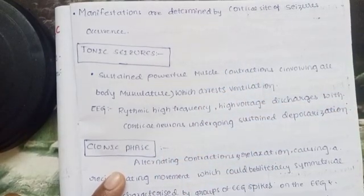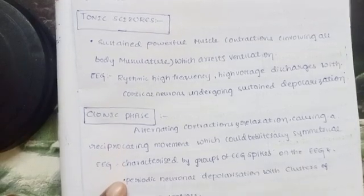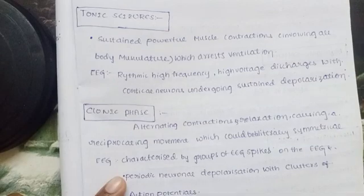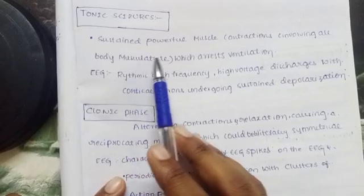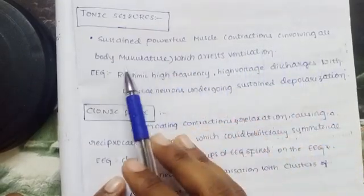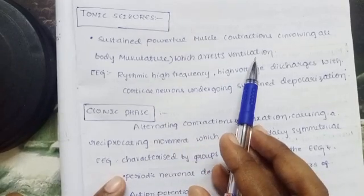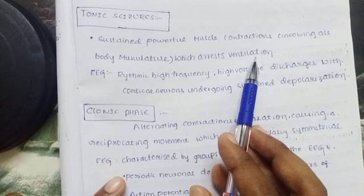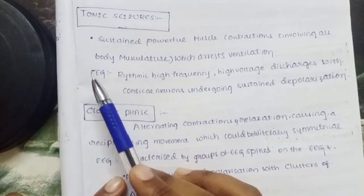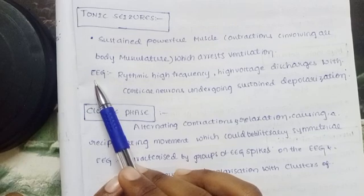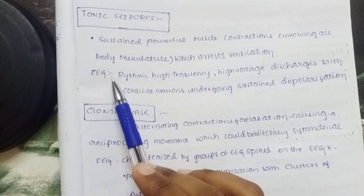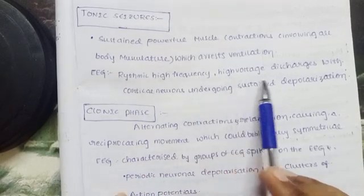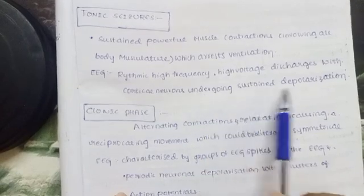Next, tonic seizures: in generalized tonic-clonic, first tonic activity occurs then clonic, but in tonic seizures only muscle contractions happen without jerk movements — sustained powerful muscle contraction involving all body musculature, which arrests ventilation. So oxygen supply is stopped and the body turns blue (cyanosis). This is identified on EEG as rhythmic high-frequency, high-voltage discharges with cortical neurons undergoing sustained depolarization.